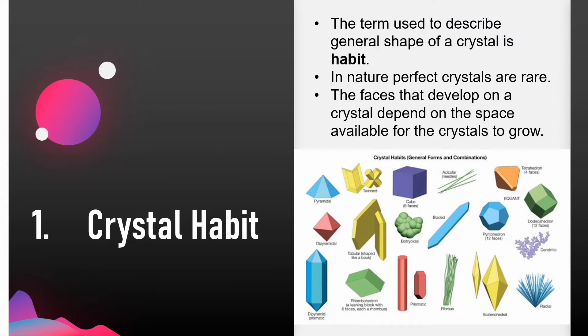Let's begin with the first physical property, i.e. crystal habit. The term used to describe the general shape of a crystal is habit. In nature, perfect crystals are rare. The faces that develop on a crystal depend on the space available for the crystals to grow. As you can see in the figure below, there are several crystal habits, general forms and combinations.